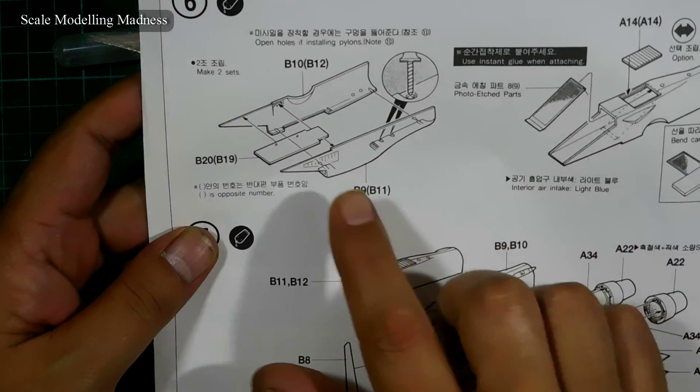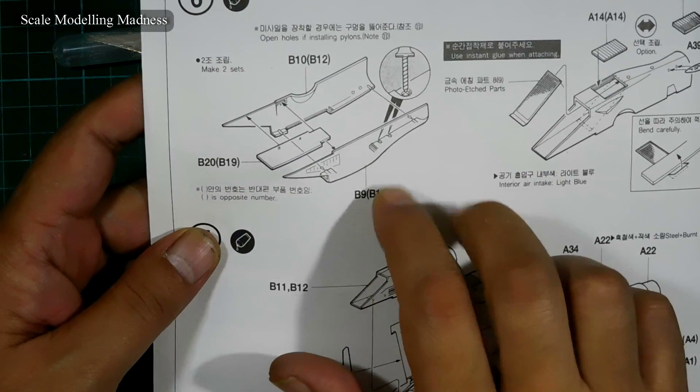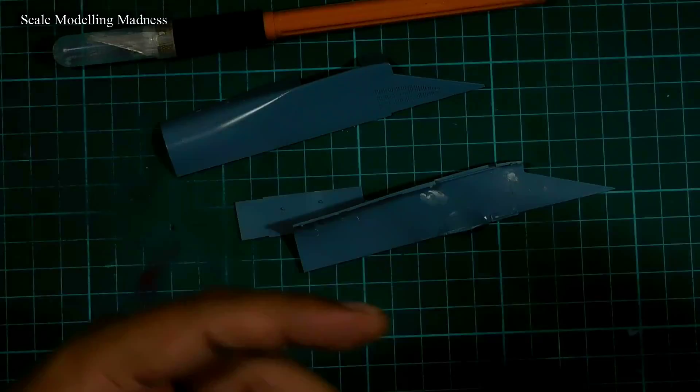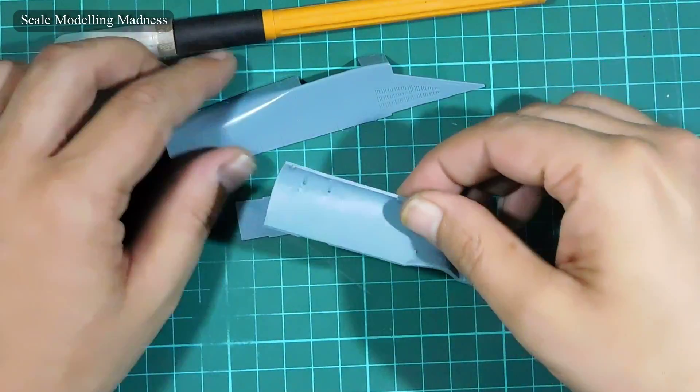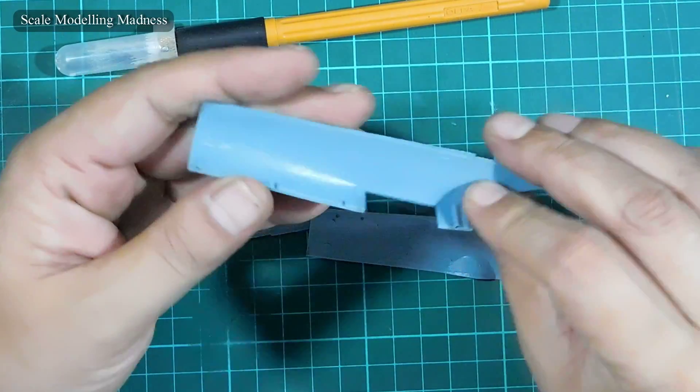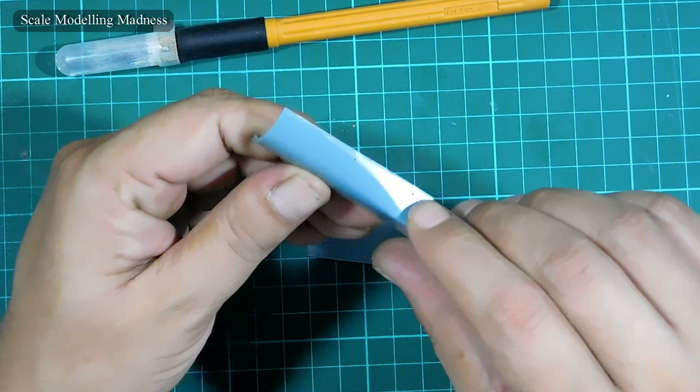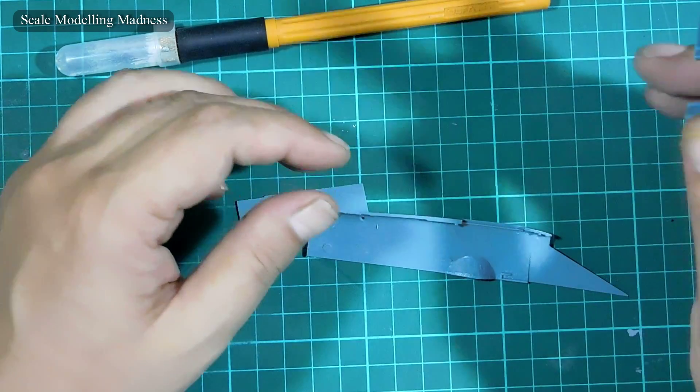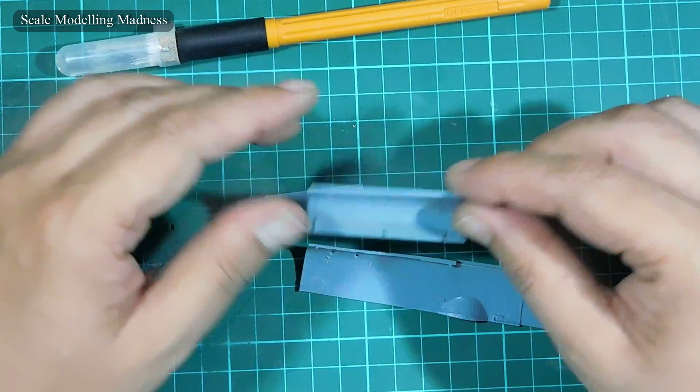I have cleaned up the parts that make up the air intake. Before we glue these together, we need to drill holes in for attaching weapon pylons later. I have only drilled tiny holes to act as markers. If need be, I will widen them later while gluing the pylon.